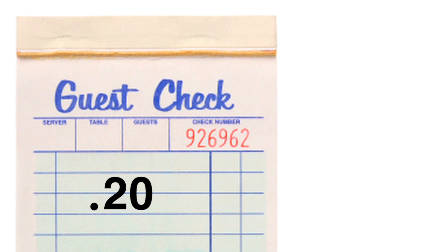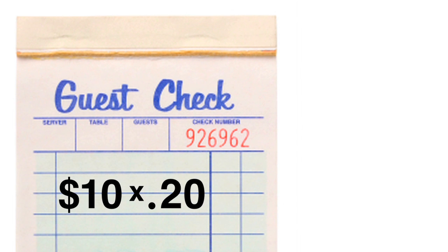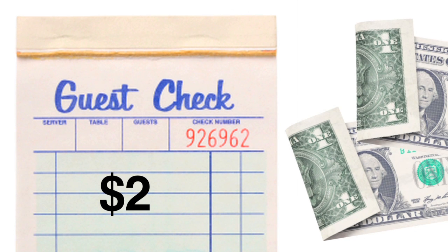Although you can't see the decimal point right now, it's understood to be at the right of the percent. Move the decimal point two places to the left to get 0.20, the decimal form of 20%. Now, multiply your bill by 0.20 to get $2, the tip.